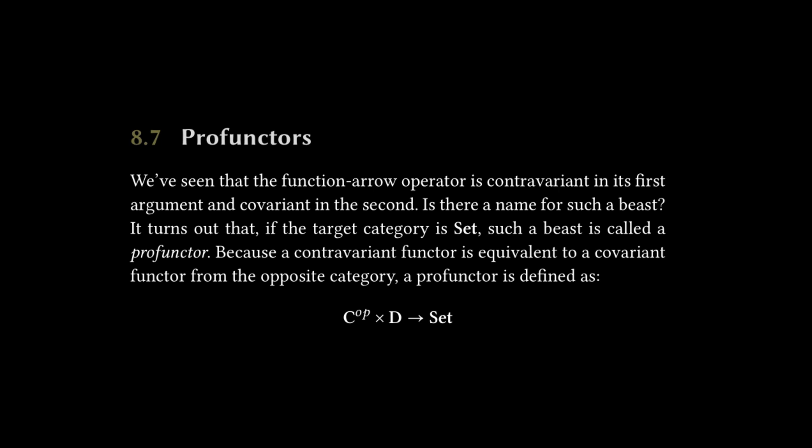We'll move on to profunctors, which the text reads: we've seen that the function arrow operator is contravariant in its first argument and covariant in the second. Is there a name for such a beast? It turns out that if the target category is Set, such a beast is called a profunctor, because a contravariant functor is equivalent to a covariant functor from the opposite category, a profunctor is defined as the following.